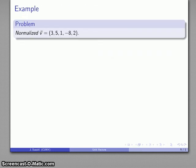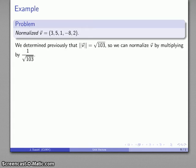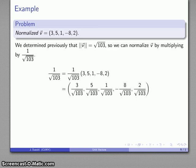So, for example, let's take a look at our vector (3, 5, 1, -8, 2), and we've determined that the magnitude of that vector is square root of 103. So I can normalize that vector by multiplying it by 1 over root 103. So that's going to look like this. And if I do that multiplication, I'll distribute that scalar multiple into the various components.